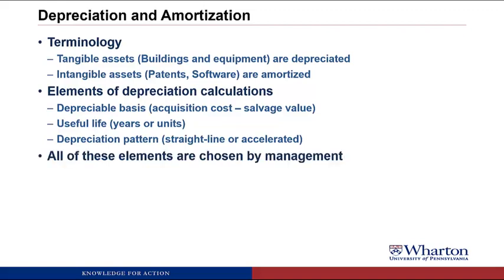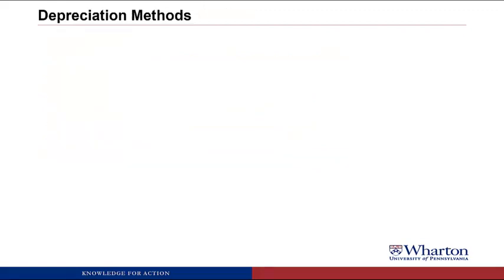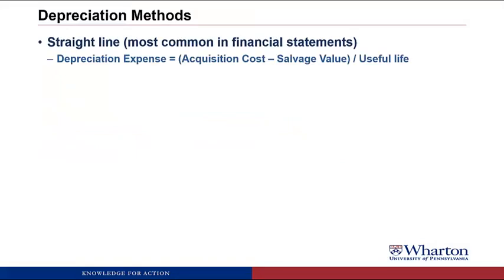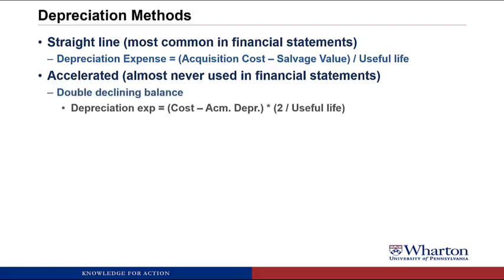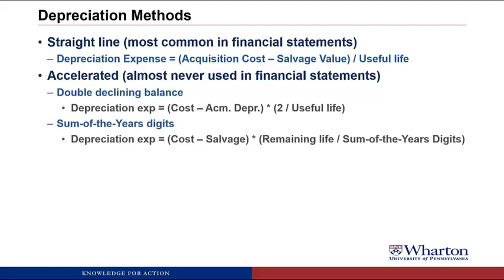Remember that all of these elements are chosen by management. Management makes their best estimate at the time they acquire the asset, and they try to choose these estimates in a way to communicate how they plan to use that equipment over time. In terms of depreciation methods, straight line is by far the most common used in financial statements. The formula is depreciation expense equals the acquisition cost minus the salvage value — otherwise known as the depreciable basis — divided by the useful life. There are also accelerated methods of depreciation, such as double declining balance and sum of the years' digits. Since these are almost never used in financial statements, I'm not going to hold you responsible for learning these formulas.